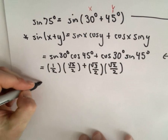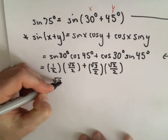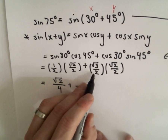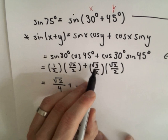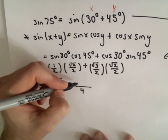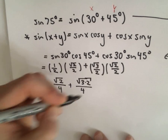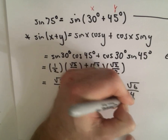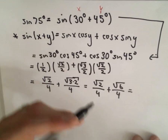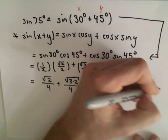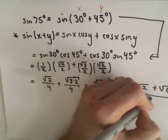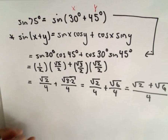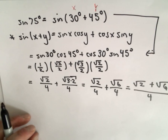So what do we get if we simplify? If we multiply across the top, we'll have the square root of 2, and 2 times 2 gives us 4 in the denominator. For the second term the denominator is also 4, and we have the square root of 3 times the square root of 2, which we can write as the square root of 6. So we've got the square root of 2 over 4 plus the square root of 6 over 4, which we can write as a single fraction: (√2 + √6) / 4. There's not really much more simplification you can do, so that's the solution for the first question.